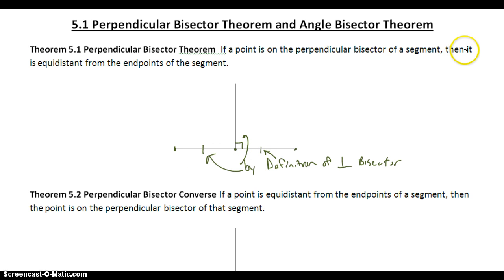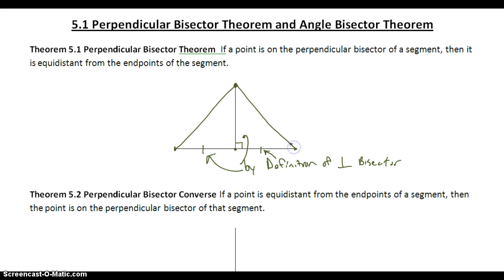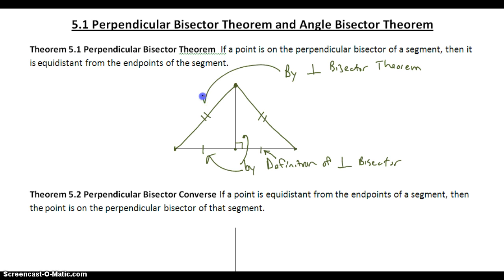The second part of the theorem says, then that point is equidistant from the endpoints of the segment. So if we have a point up here on the perpendicular bisector, it is equidistant to either endpoint. Equidistant means congruent. So by the perpendicular bisector theorem, we know this is true, and it's true for any point on the perpendicular bisector.